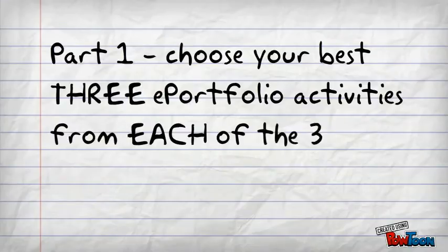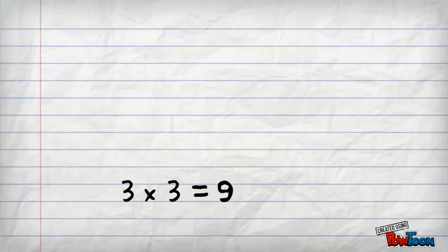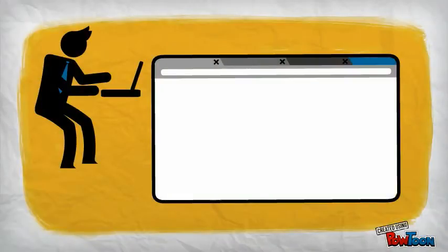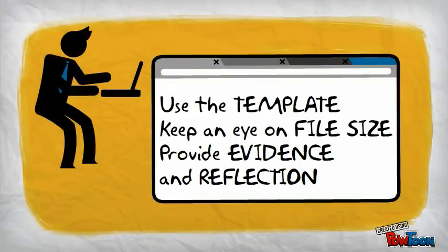To start off with, you've got to choose your favorite ePortfolio activities or the ones you think you've done best. Do make sure that you keep an eye on file size because everything's got to fit into 7 megs, your whole EMA.